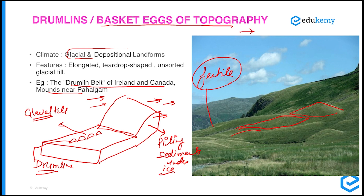In this video we have seen glacial landforms: cirque, U-shaped valleys, truncated spurs, fjords, eskers, and drumlins. Thank you and have a nice day.